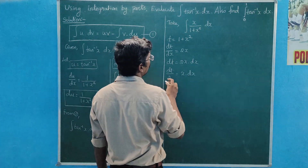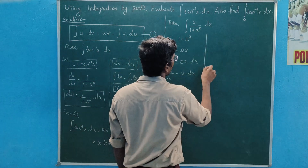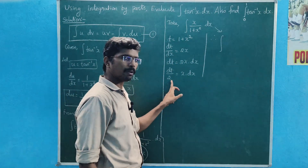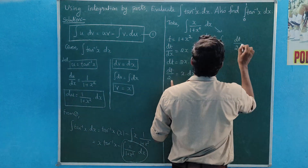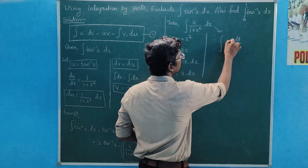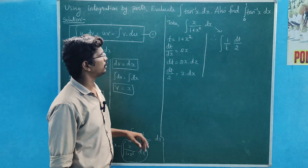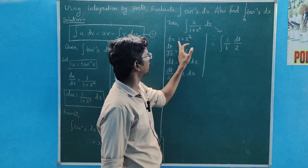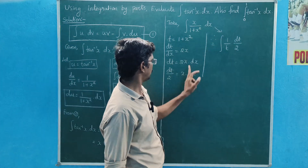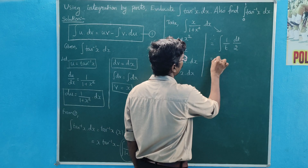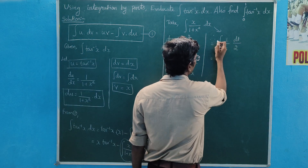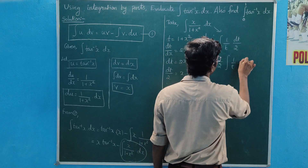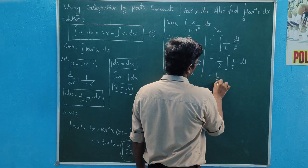Therefore, this integral is one half. We apply the substitution t equals 1 plus x square, so dt equals 2x dx, giving x dx equals dt by 2. Then 1 divided by 1 plus x square becomes 1 over t. So the integral becomes integral of 1 by t.